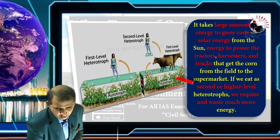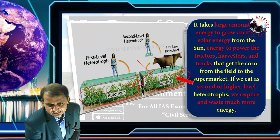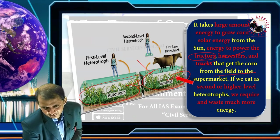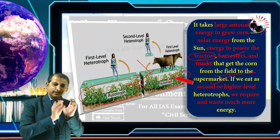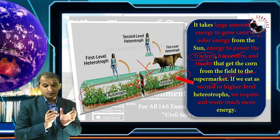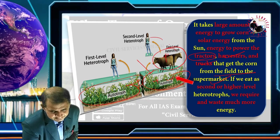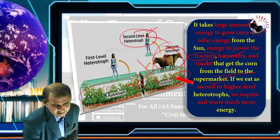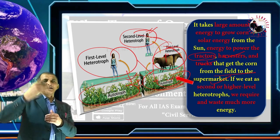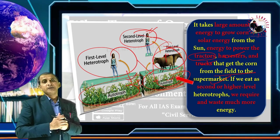It takes a large amount of energy to grow corn — energy from the sun for photosynthesis, and power for tractors and harvester trucks that get the corn from the field to the supermarket. If we eat at a second or higher trophic level, we consume and waste much more energy. The higher the trophic level, the more energy is required — this is the basic energy configuration in trophic levels.